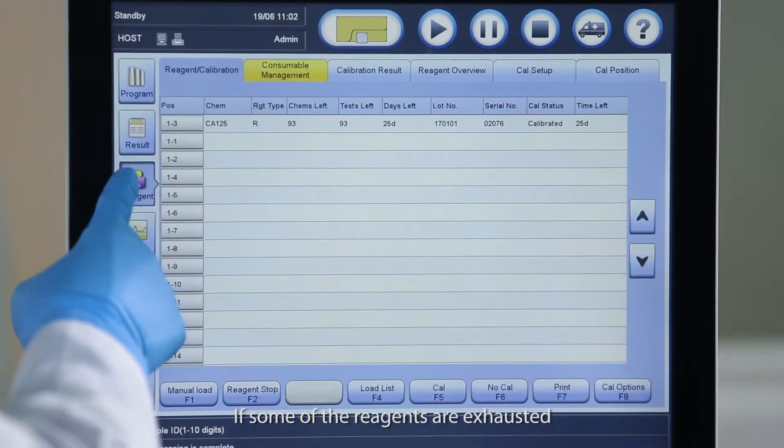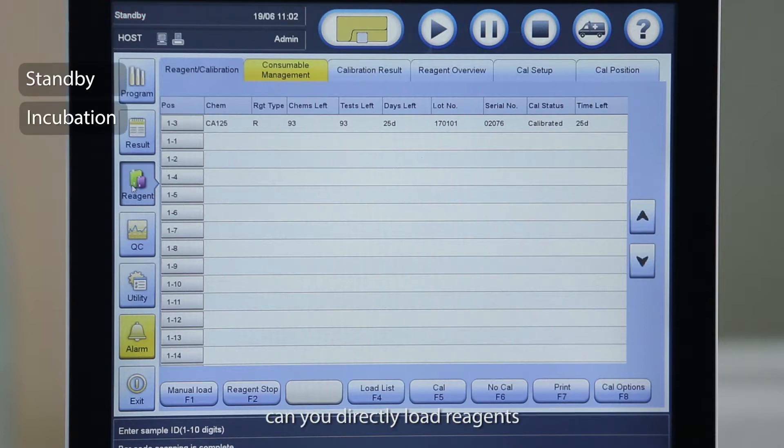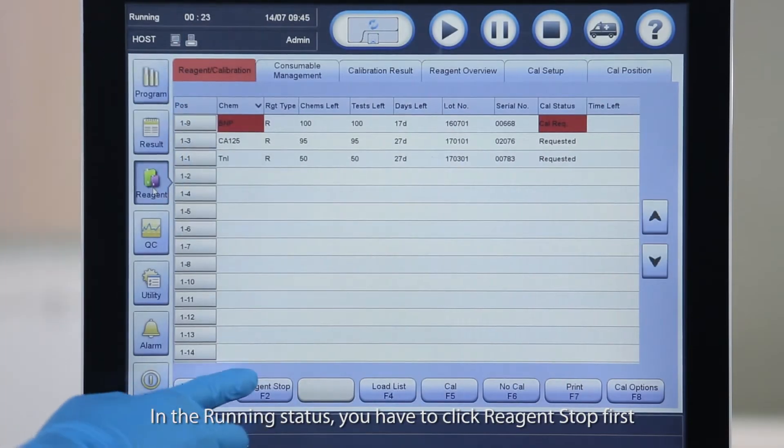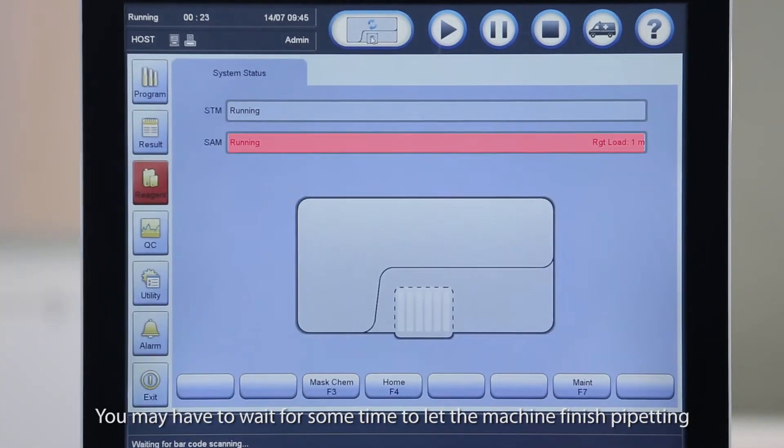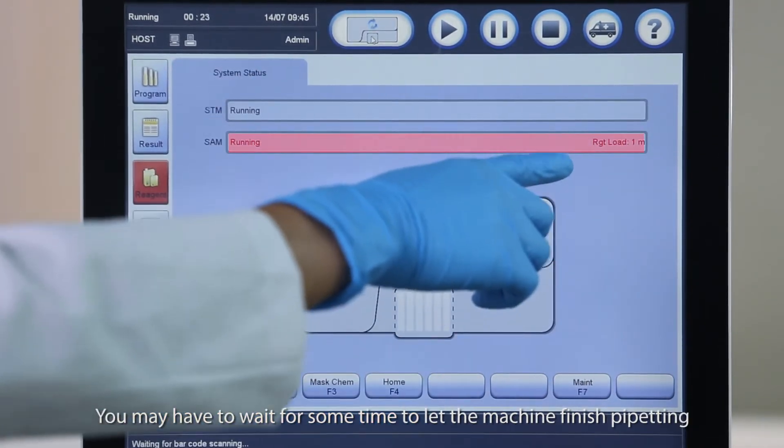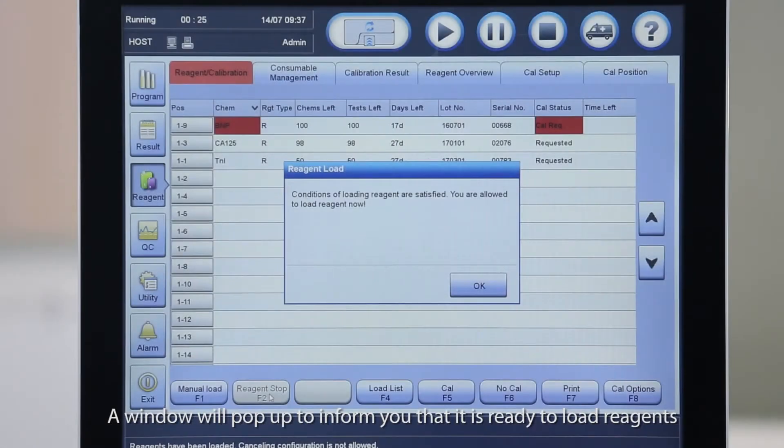If some of the reagents are exhausted or you need to add more reagents, please first check the status of the system. Only when it is on standby or incubation can you directly load reagents. In the running status, you have to click reagent stop first. You may have to wait some time to let the machine finish pipetting. A window will pop up to inform you that it is ready to load reagents.